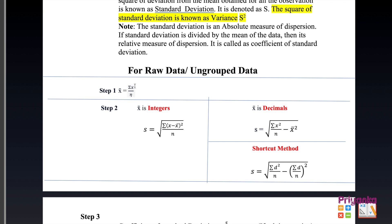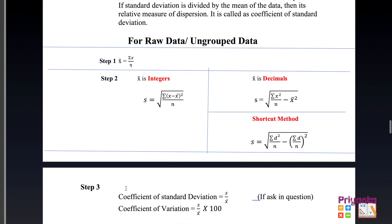For raw (ungrouped) data, the first step is to find the mean: sigma X divided by the number of observations. If the mean is an integer (no decimal), use the first formula for the second step. If the mean comes in decimal, use the alternate formula. There is also a shortcut method in the textbook, which I will demonstrate in at least one question. The last step is the coefficient of standard deviation using S from step 2 and mean from step 1.